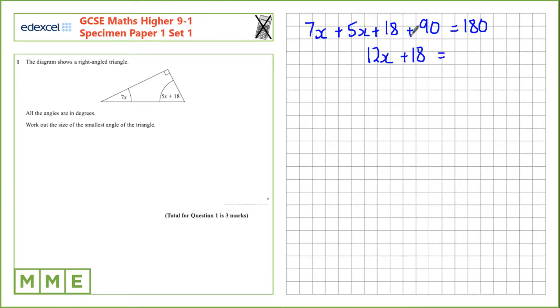And 180 take away the 90 from this side is 90. Now let's take away 18 from both sides. On the left hand side we're left with 12x, and 90 take away 18 is 72.